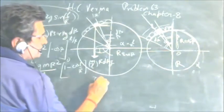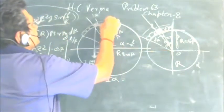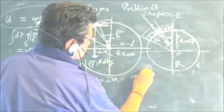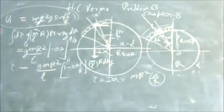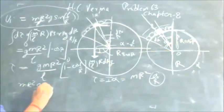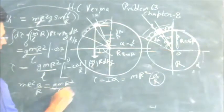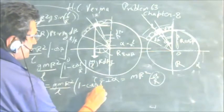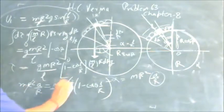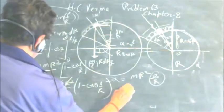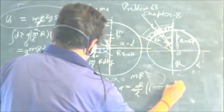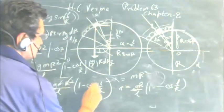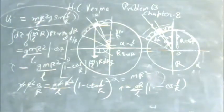Total torque equals I·α_angular. The moment of inertia of the chain is MR² (whole mass at distance R). The angular acceleration α_angular = A/R, where A is the tangential acceleration. So MR²·(A/R) = GMR²/L · (1 − cos(L/R)). Solving: M cancels, giving A = GR/L · (1 − cos(L/R)). This is the answer for the tangential acceleration.